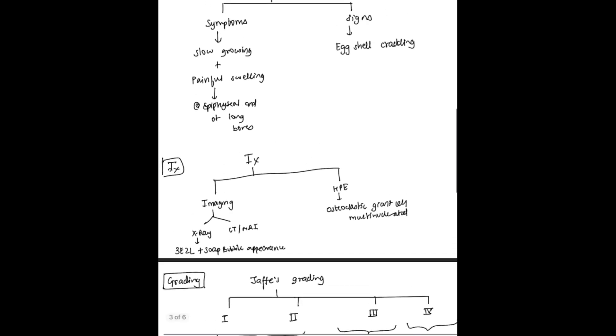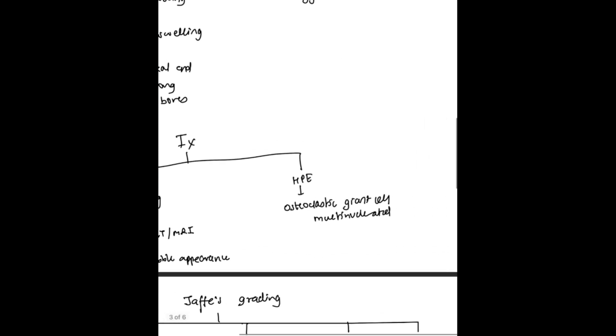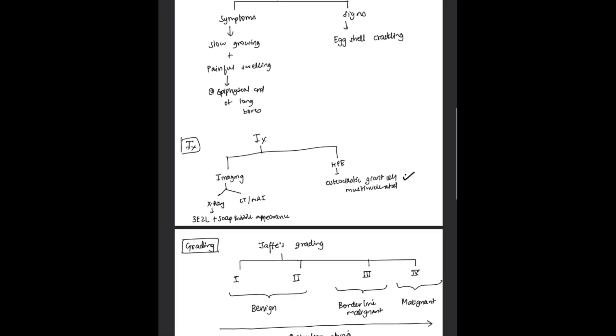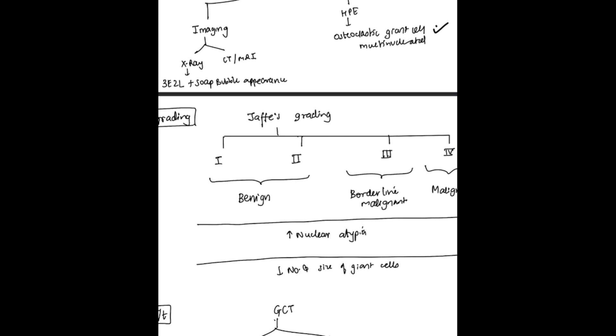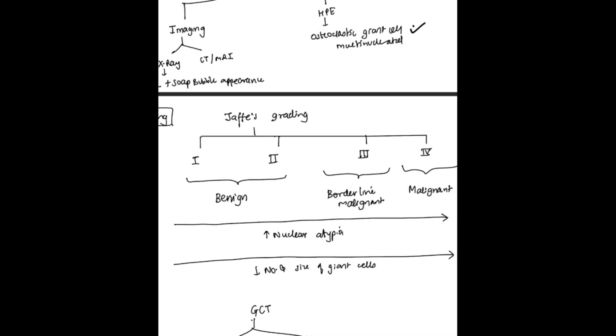CT and MRI are used to know the extent more precisely. Coming to histopathological examination: multinucleated osteoclastic giant cells are seen. Now coming to grading, there is a Jaffe grading for osteoclastoma, that is GCT. GCT is divided into four grades: 1, 2, 3, 4. First and second are included in benign, third grade is borderline malignant, fourth is malignant, which is 5% of the tumors only.